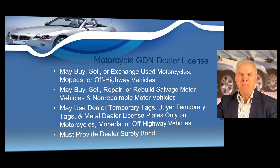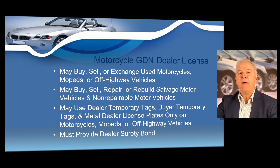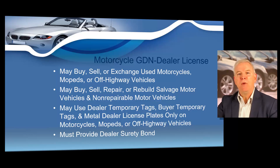A motorcycle GDN allows you to buy, sell, or exchange used motorcycles, mopeds, off-highway vehicles — which would be ATVs, ROVs, and UTVs — or auto cycles. It also allows you to buy, sell, repair, or rebuild salvage motor vehicles and non-repairable motor vehicles. This license allows you to use dealer temporary tags, buyer temporary tags, and metal dealer license plates only on motorcycles, mopeds, or off-highway vehicles. This license also requires that you provide a dealer surety bond.